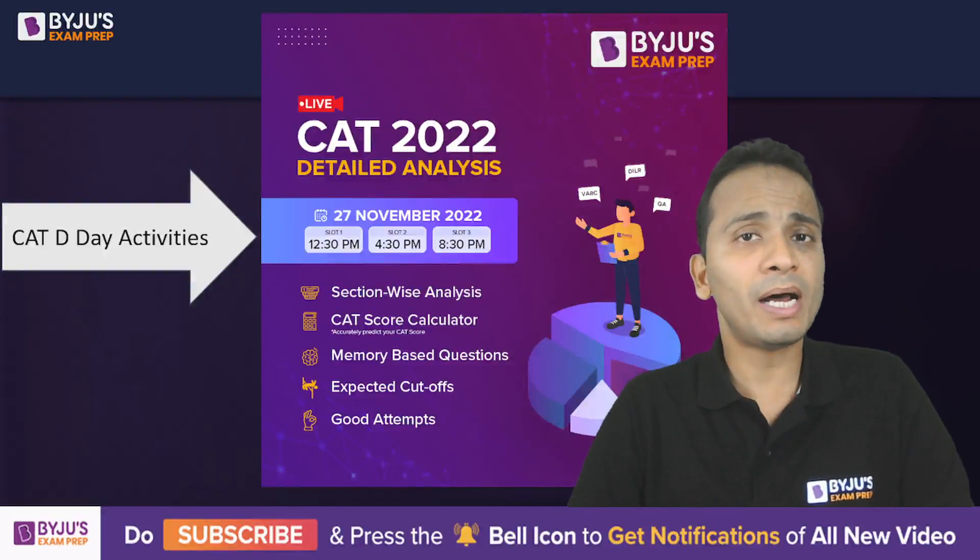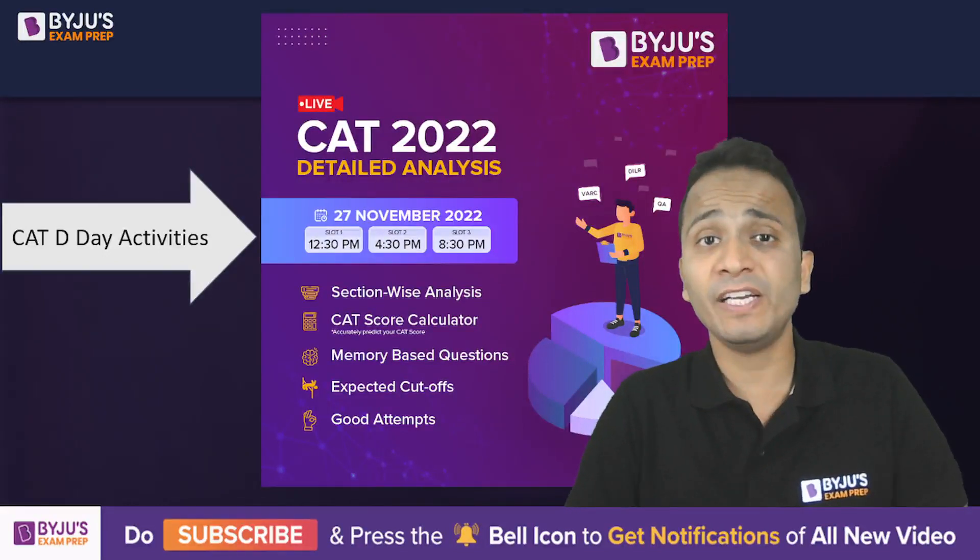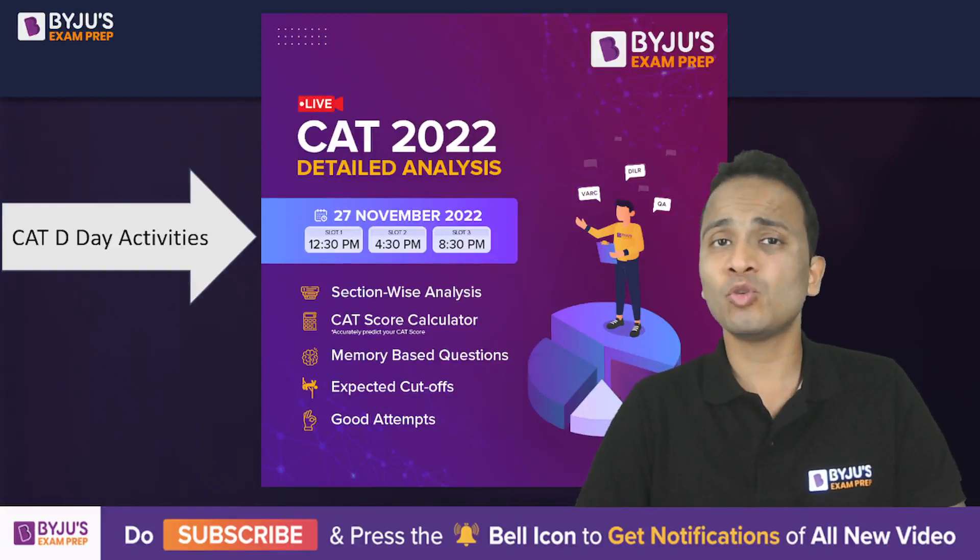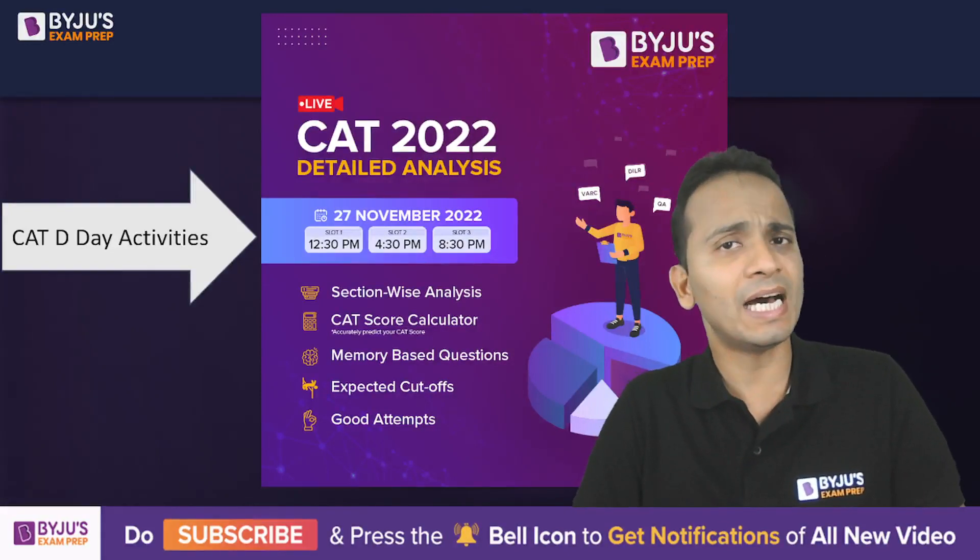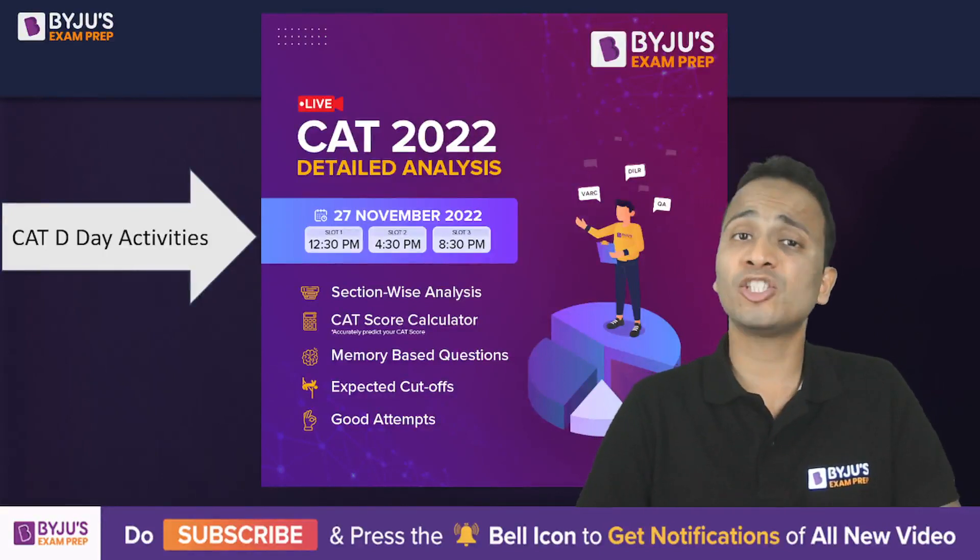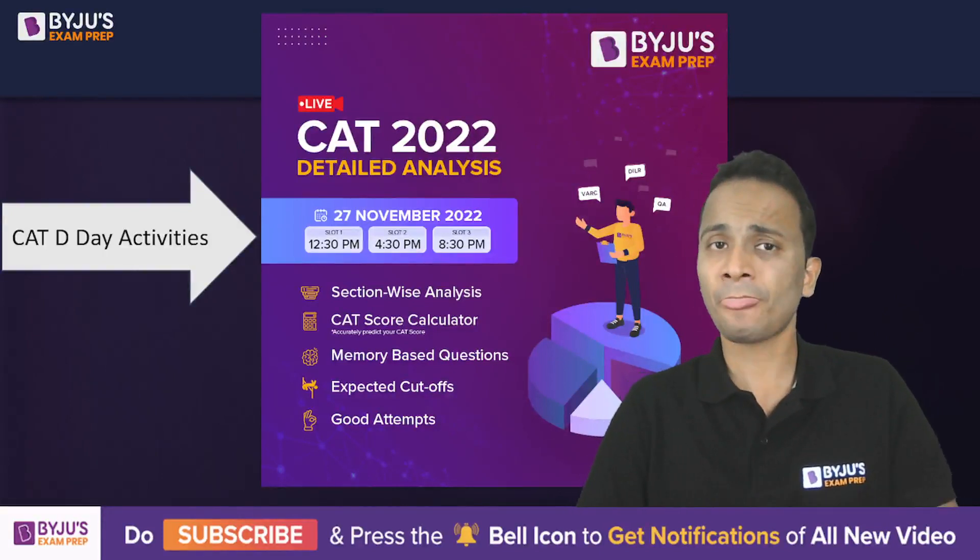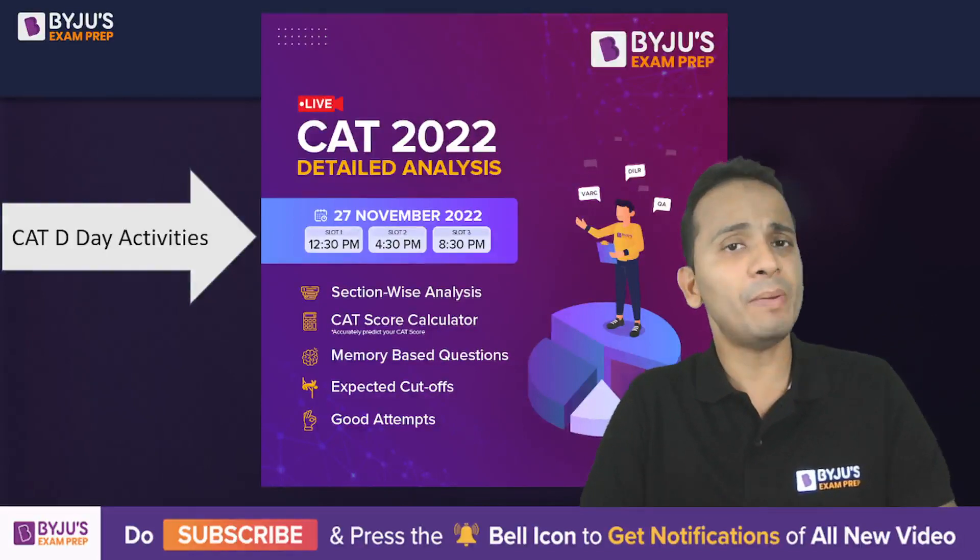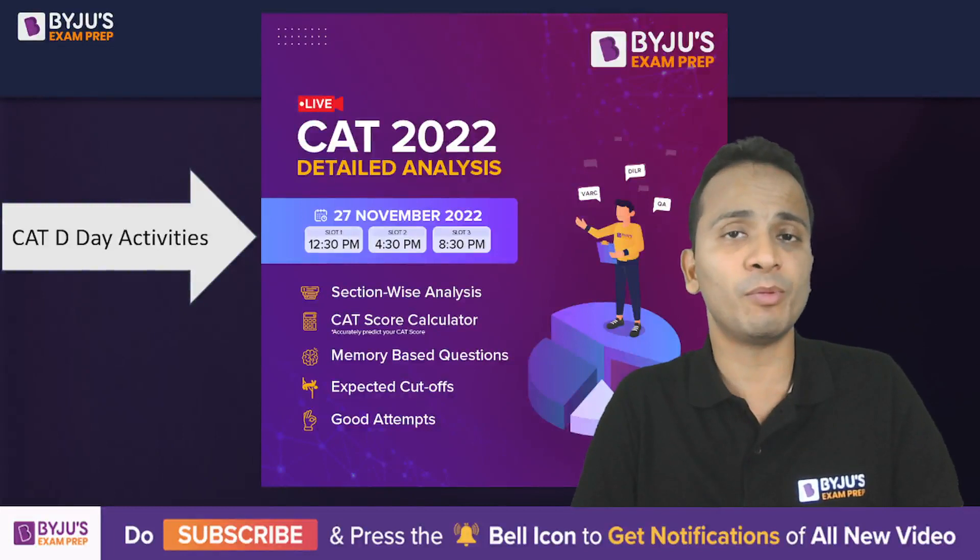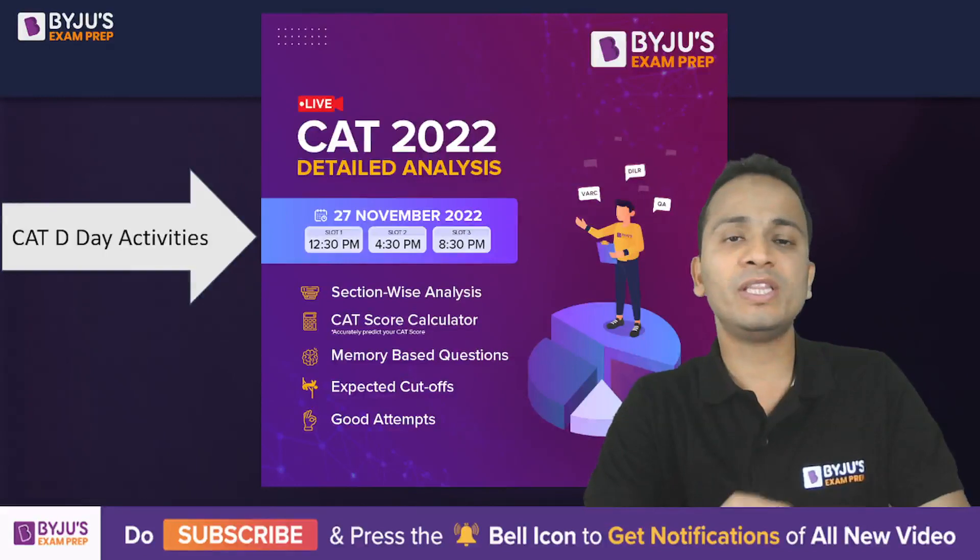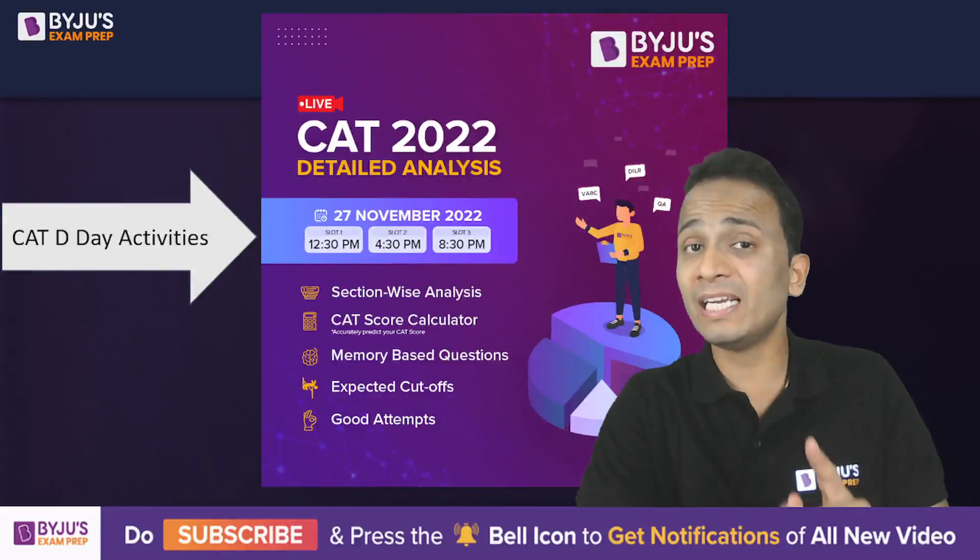Also, you all must join us for the CAT D-Day Activity on 27th November 2022. We will present the CAT 2022 detailed analysis, and this analysis will be done slot-wise. Slot number one will be at 12:30, slot number two at 4:30 PM, and slot number three at 8:30 PM. You'll find the section-wise analysis, the CAT score calculator, memory-based questions, expected cutoffs, and good number of attempts. I hope you will all join us on D-Day for the detailed analysis of CAT 2022.